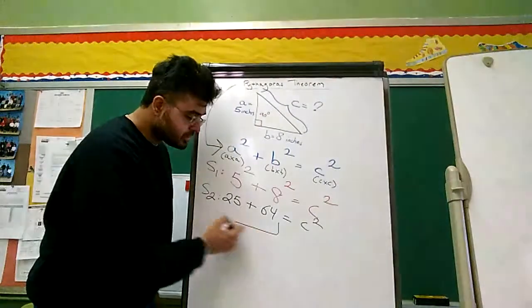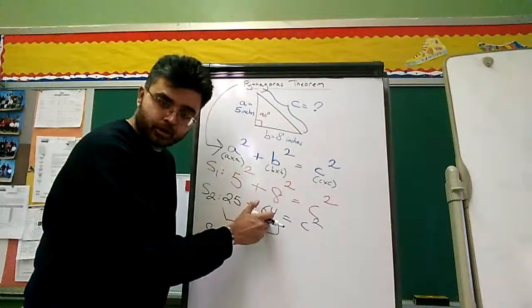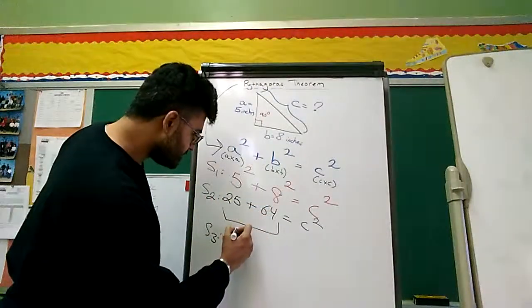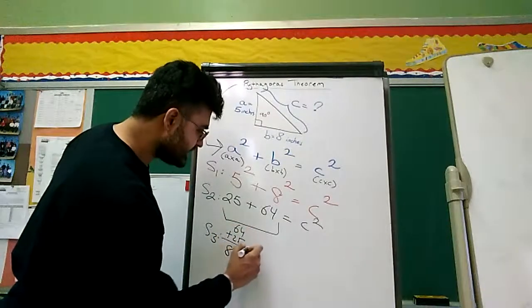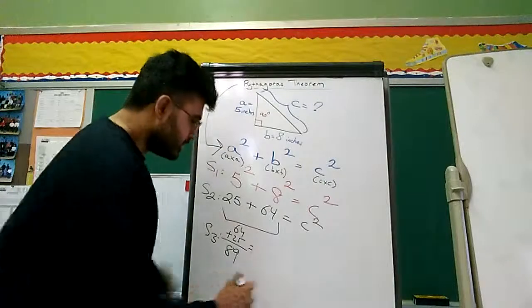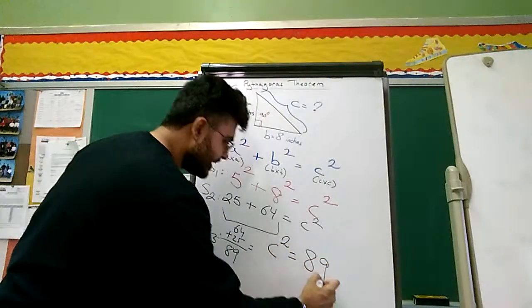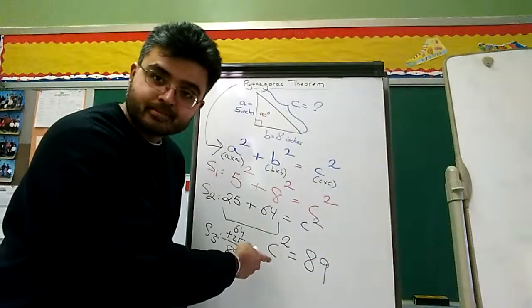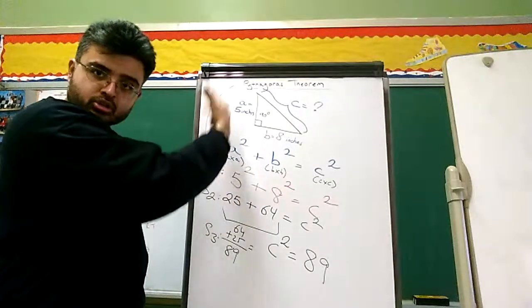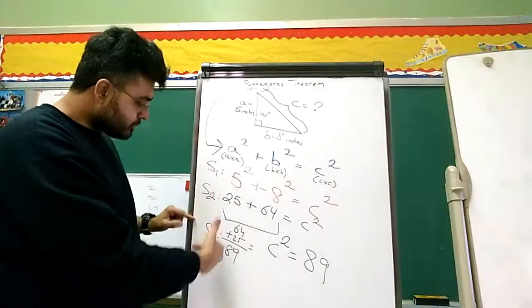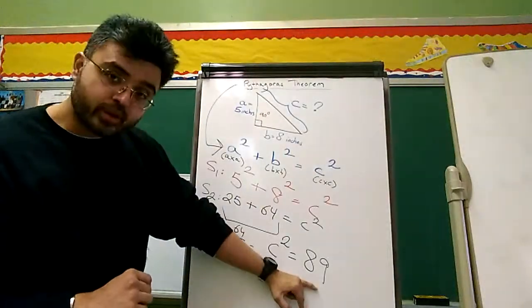Now, let's add these numbers up. Step three. What is 25 plus 64? 25 plus 64 is 89. So C squared is equal to 89. Do you see that? Step one: plug in the numbers. Step two: solve the exponents. Step three: add up those numbers. And we are left with C squared equals 89.